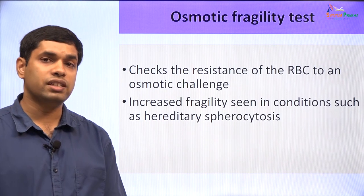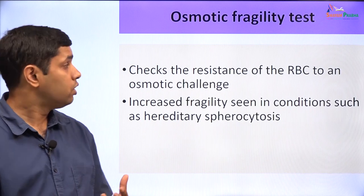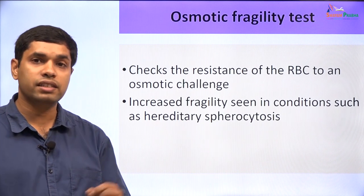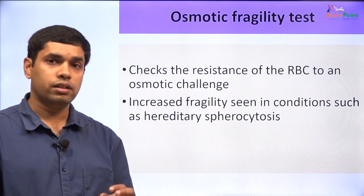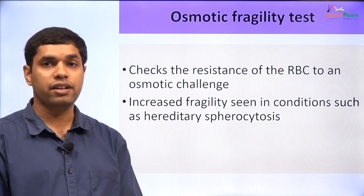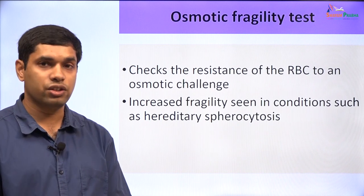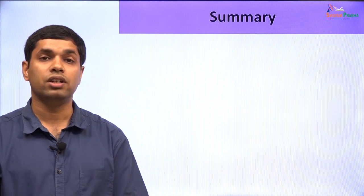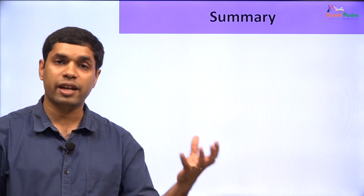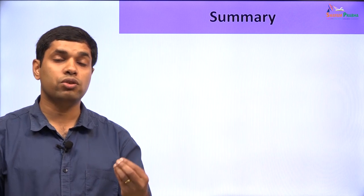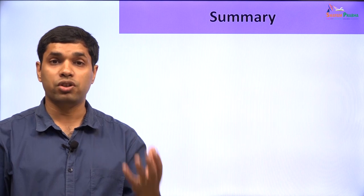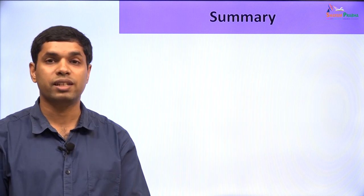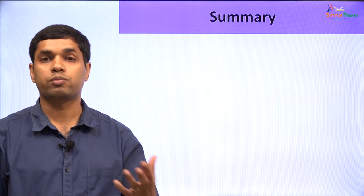Another test is the osmotic fragility test, which assesses the ability of an RBC to resist an osmotic challenge. It is done by placing an RBC into solutions of varying osmolarity and determining at which hypoosmolar concentration the RBC undergoes lysis. This fragility is increased in conditions such as hereditary spherocytosis and is used to diagnose this condition. In conclusion, we have discussed molarity and osmolarity, their relationship, cell behavior in iso-osmotic, hypo-osmotic, and hyper-osmotic solutions, the reflection coefficient, tonicity, and osmoreceptors and how the body corrects plasma osmolarity when it changes.